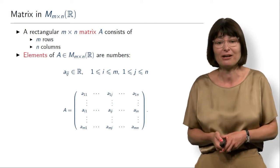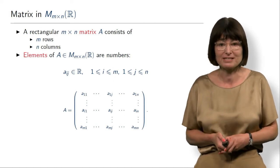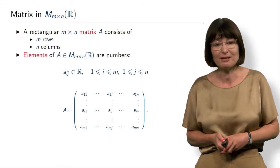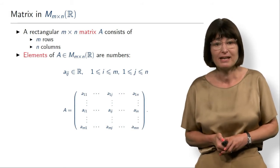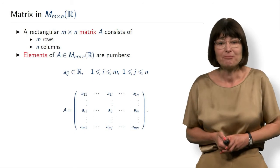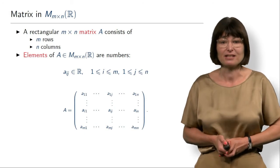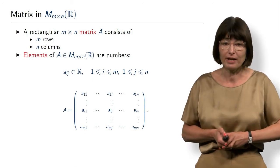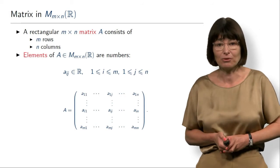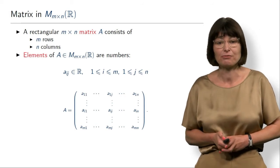And here is how we can write the matrix at the bottom of the slide. It consists of elements which we denote by small a's, and a_ij means an element which is in row i and column j. This is how we denote the matrix.